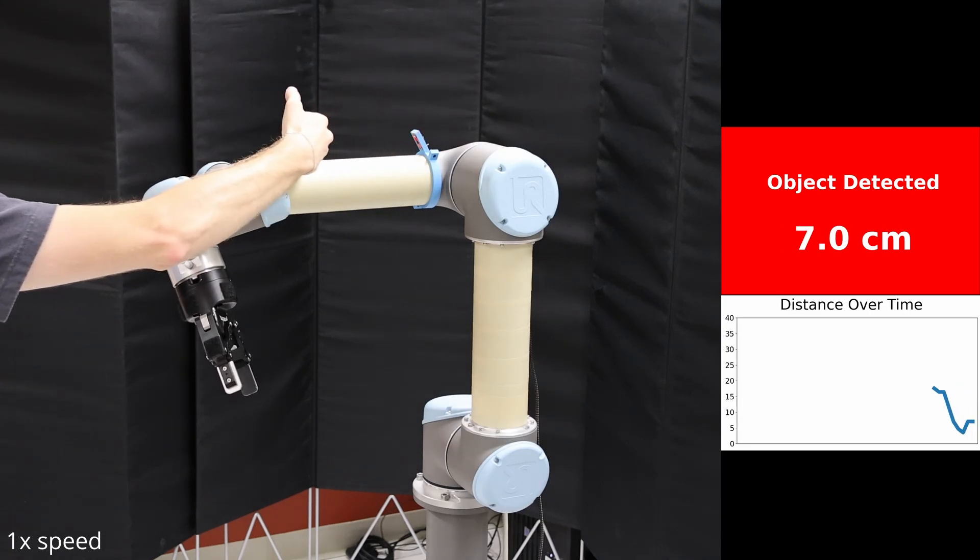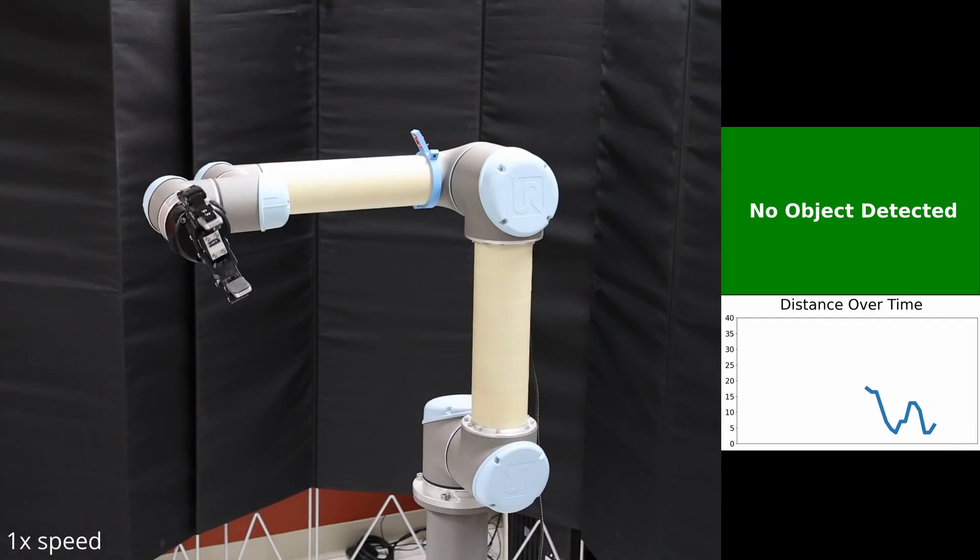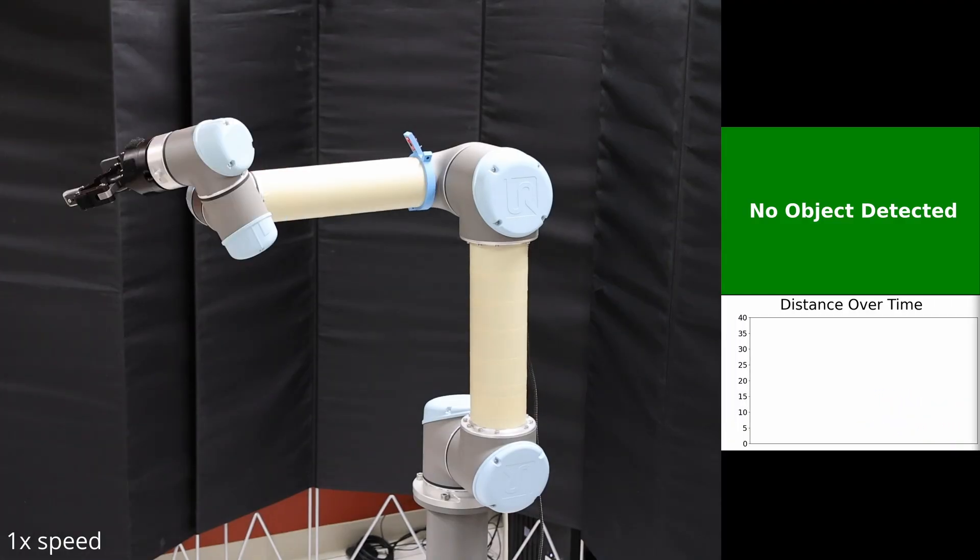However, as objects enter the field of view of the sensor, they are detected, even when they occupy the same space as the wrist lengths once did. Objects are detected and localized along the entire length of the arm.